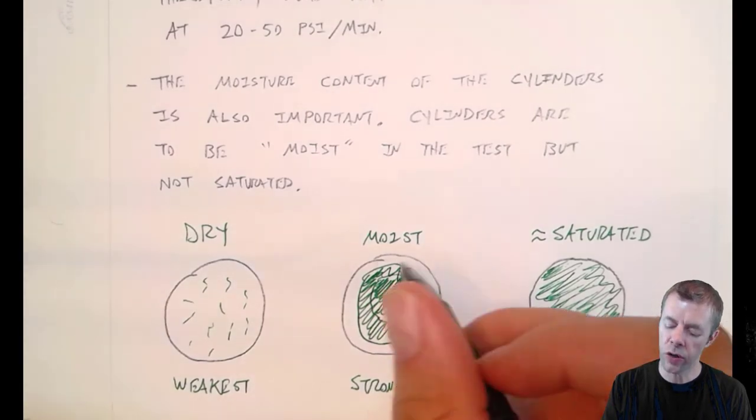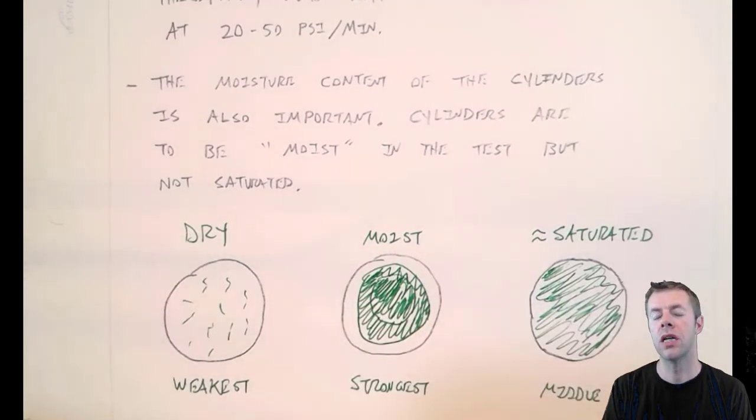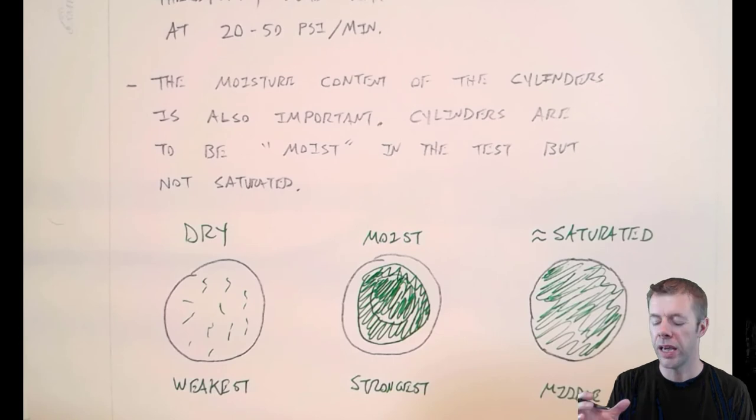When you do that, this outer layer of concrete shrinks. And when it shrinks, it's going to pre-compress the inner core. It's going to actually make it stronger. Pretty crazy.